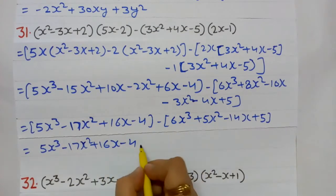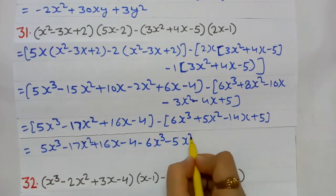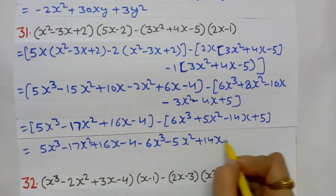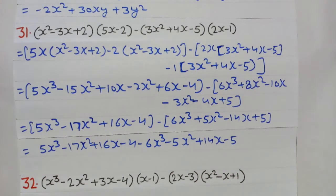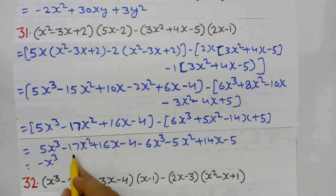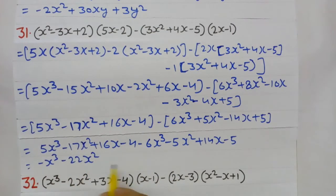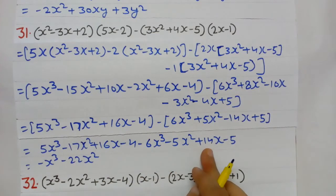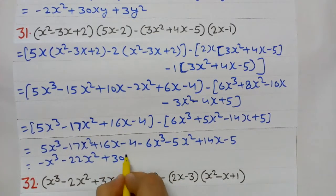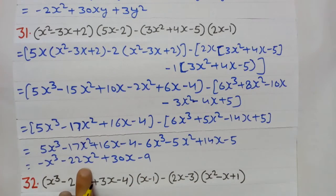There is a minus before the second bracket, so signs change: minus 6x³, minus 5x², plus 14x, minus 5. Now solving like terms: 5x³ − 6x³ = −x³. −17x² − 5x² = −22x². 16x + 14x = 30x. −4 − 5 = −9. Answer: −x³ − 22x² + 30x − 9.